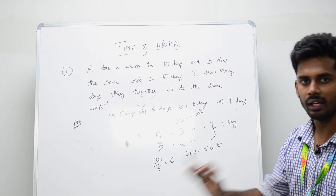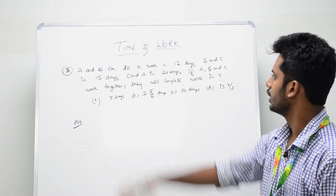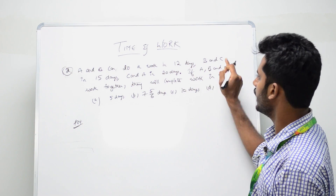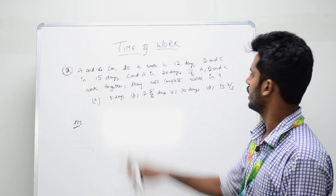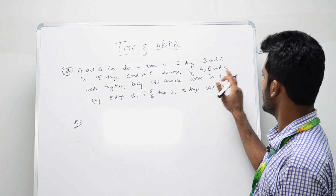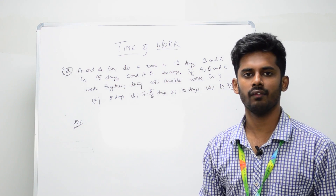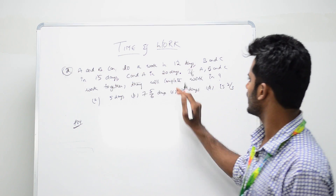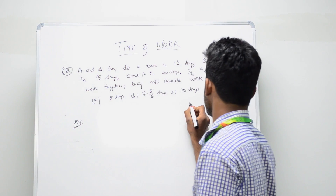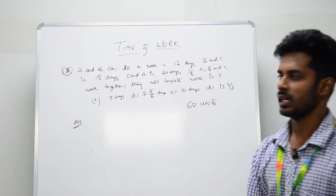Coming to the second question: A and B can do a work in 12 days, B and C in 15 days, and C and A can do the same work in 20 days. If A, B, and C work together, they will complete the work in how many days? Whenever you see this kind of question, take the LCM of 12, 15, and 20, which gives you 60. So consider the total as 60 units.